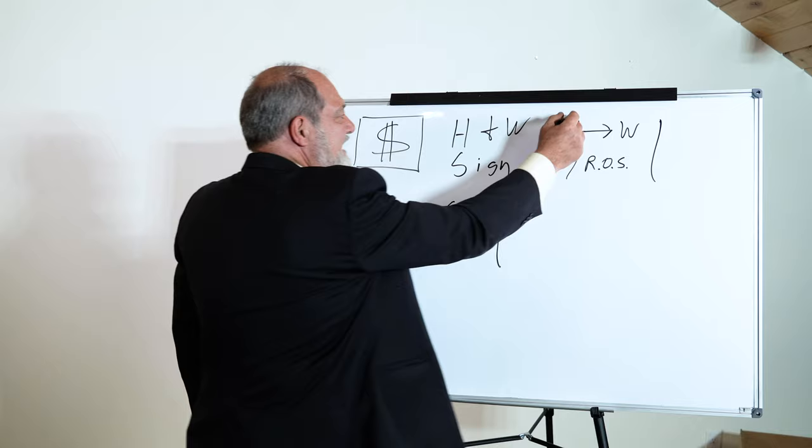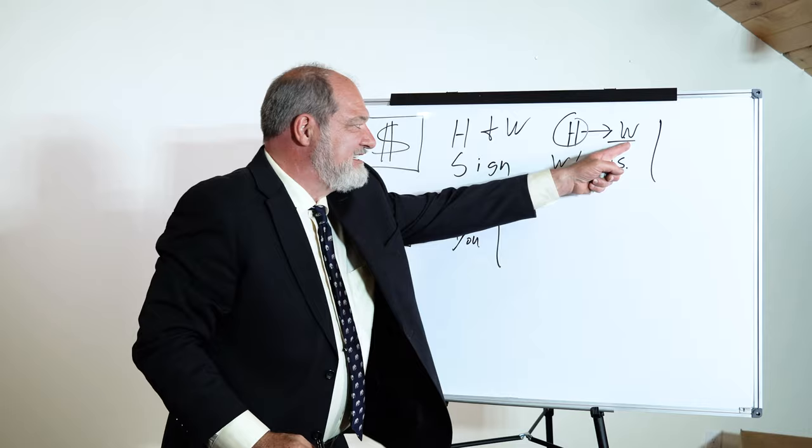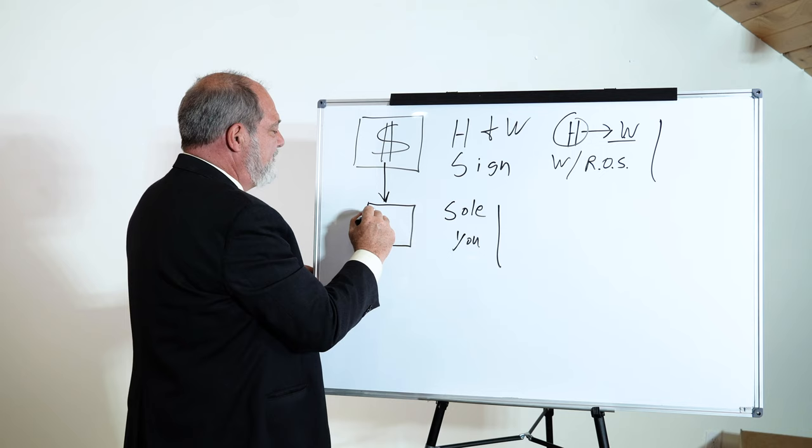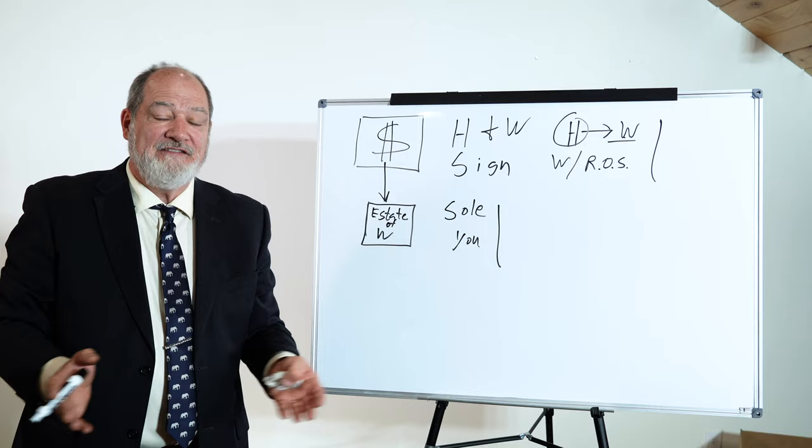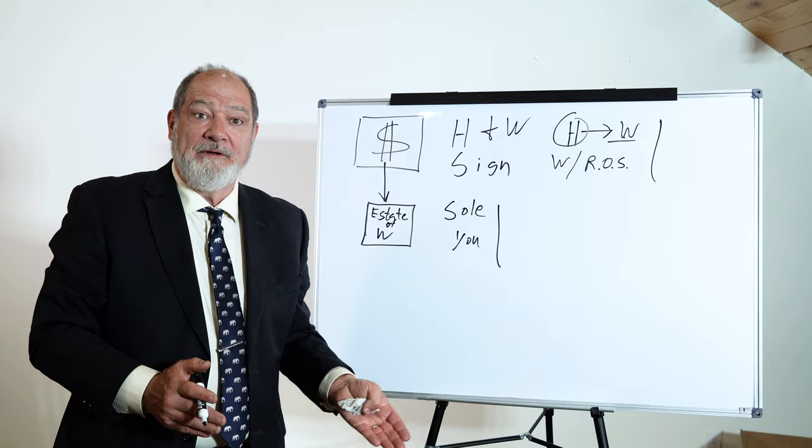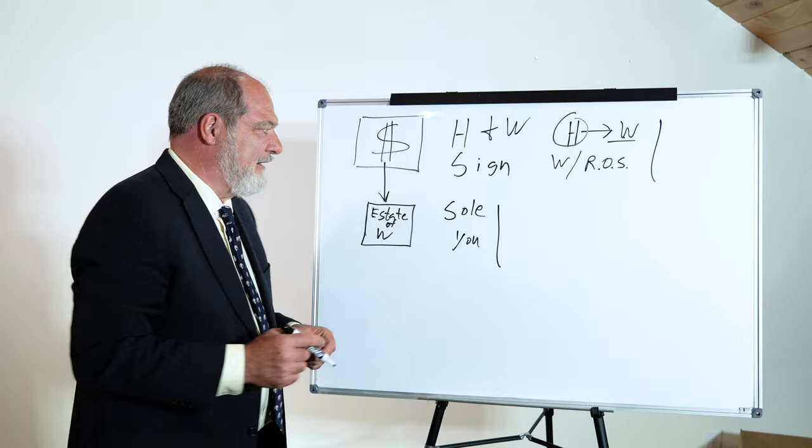The only thing you can do in this case is the bank would have to make it payable to the estate of wife, or the estate of you. Whenever you see the word 'to the estate of,' that means we're in probate land. Your kids are going to have to come down and pay me $2,000 up front to open a probate. But you can avoid all that by handling your bank account properly.